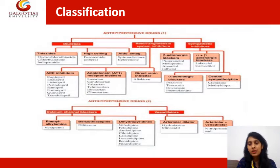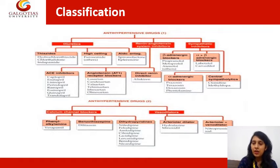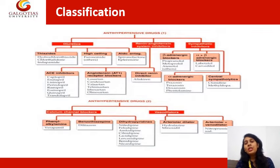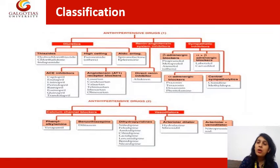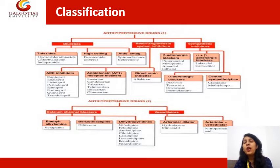Central sympatholytics also inhibit the sympathetic nervous system, but they act centrally — on the CNS. The other subcategories act on the peripheral system. Everything outside the CNS is known as peripheral, meaning the alpha and alpha-plus-beta adrenergic blockers act on receptors present in peripheral organs.